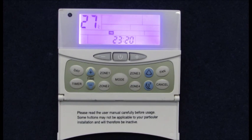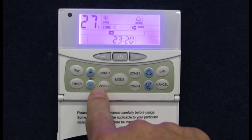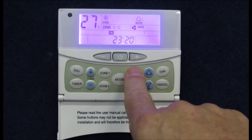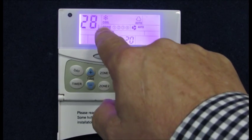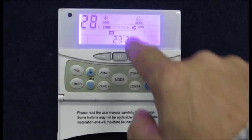If your system has zones installed with dampers, then there are zone buttons that allow these zones to be turned on and off. Zone one is the master zone and can only be turned off providing that two other zones are turned on.